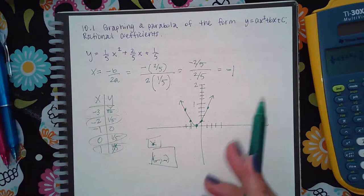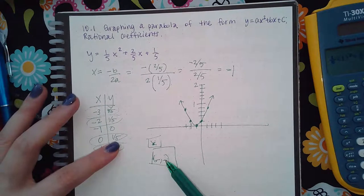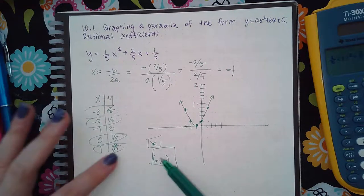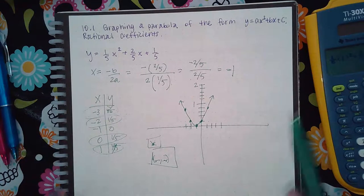Negative 1 and 0, plot. 0 and then 1 fifth, 1 over 5, plot. 1 and 4 over 5, plot. And then exit out.